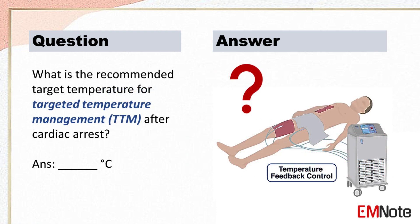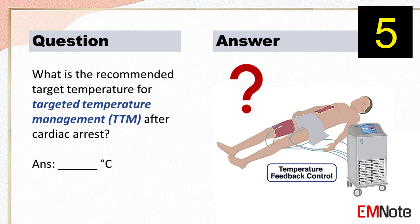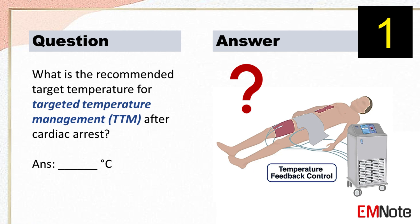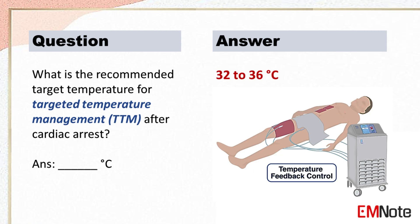What is the recommended target temperature for targeted temperature management after cardiac arrest? The recommended target temperature for targeted temperature management after cardiac arrest may range from 32 to 36 degrees Celsius.